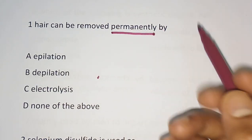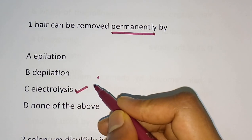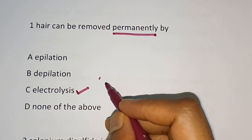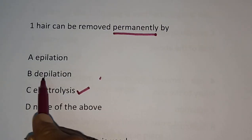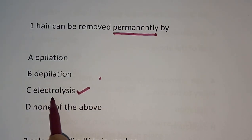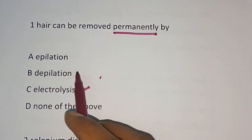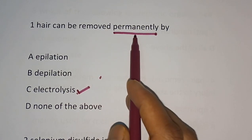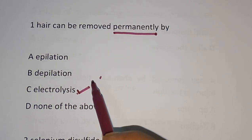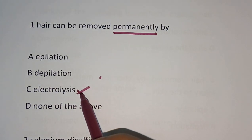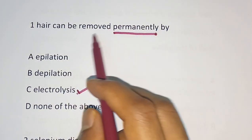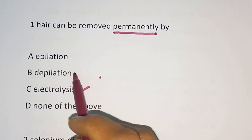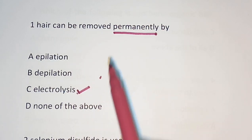The correct answer is Electrolysis. For hair removal, three methods exist: Epilation, Depilation, and Electrolysis. Out of these three methods, only Electrolysis provides permanent removal. Even though it is comparatively costly, it is the only method for permanent hair removal. Epilation and Depilation are only temporary removal methods.